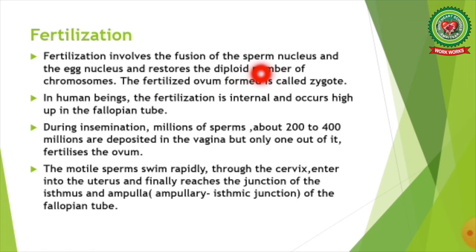Starting with fertilization. Fertilization involves the fusion of the sperm nucleus and the egg nucleus and restores the diploid number of chromosomes. The fertilized ovum formed is called a zygote. In human beings, fertilization is internal and occurs high up in the fallopian tube.